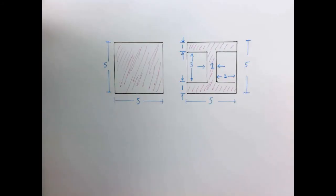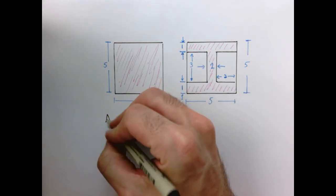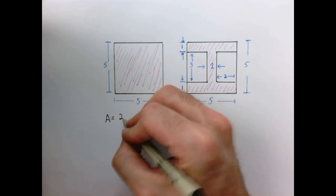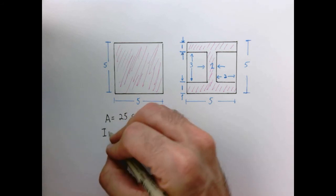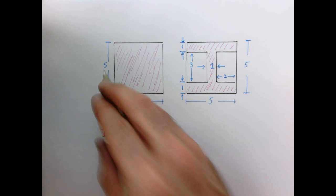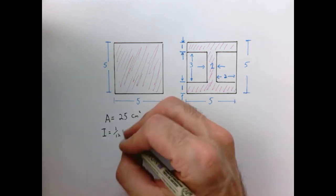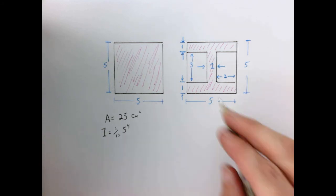To be a little more quantitative, let's compare the following two cross-sectional shapes, a square that's five by five centimeters, and an I-beam that's also five by five centimeters, but has a geometry as such. So in this case, the area of the beam is quite simple. It's just five times five, so it's 25 centimeters squared. The moment of inertia in this case is one-twelfth bh cubed, but b and h are both five, so it's five to the fourth power.